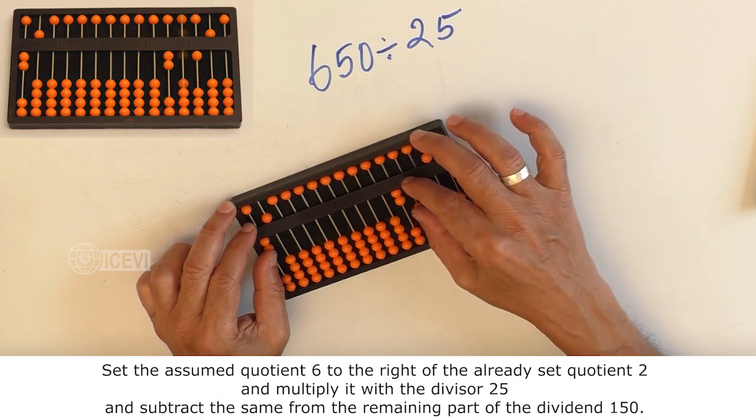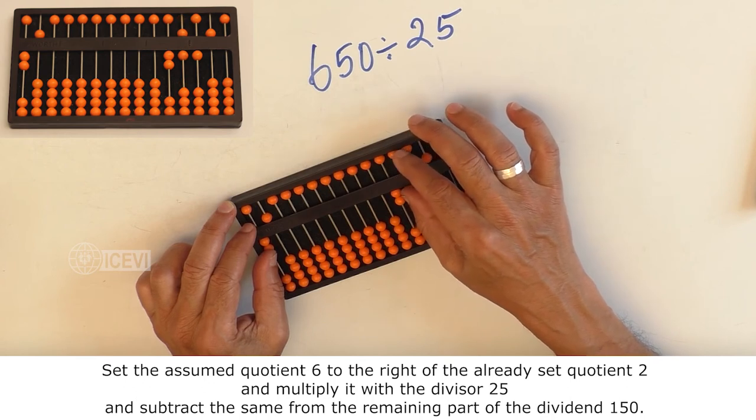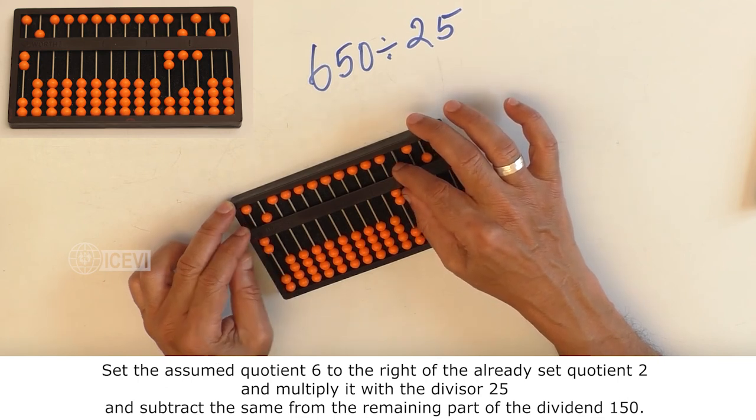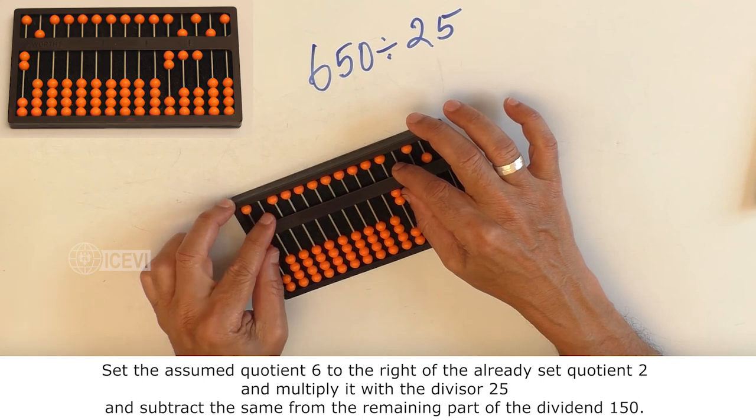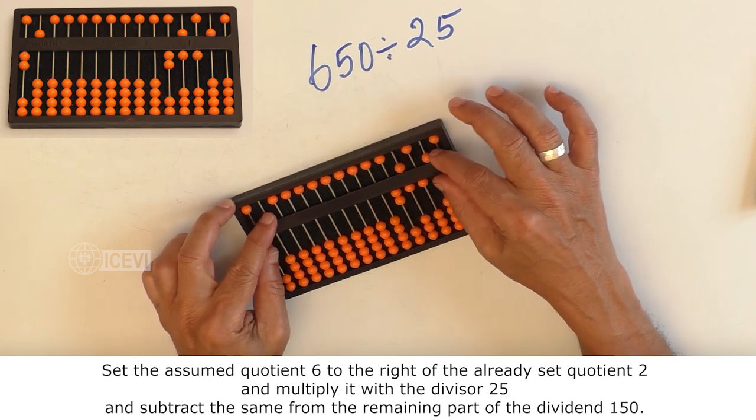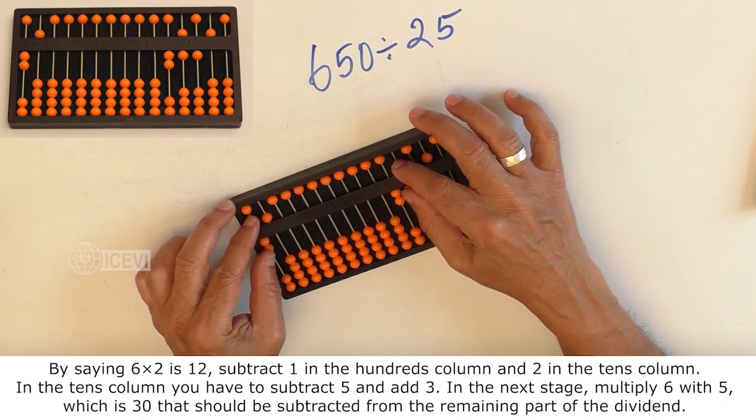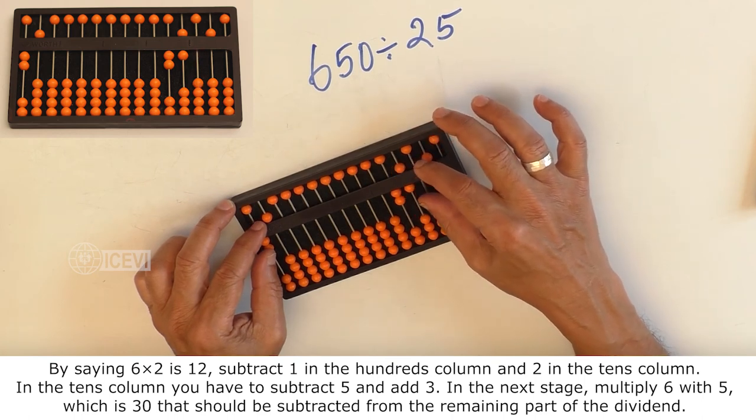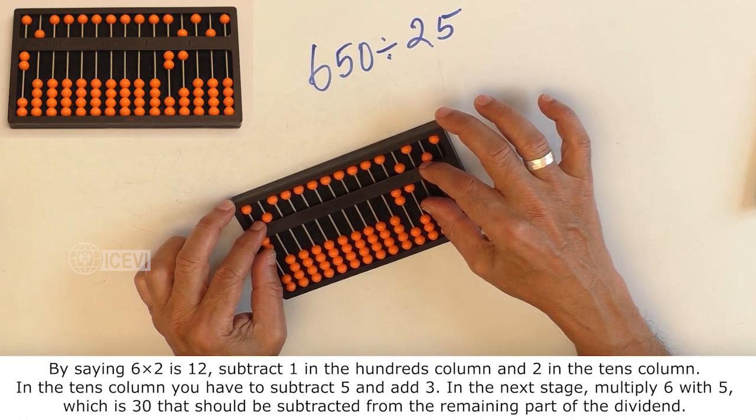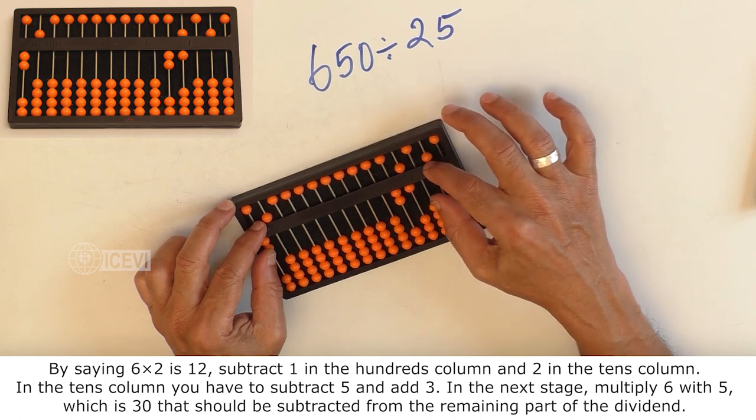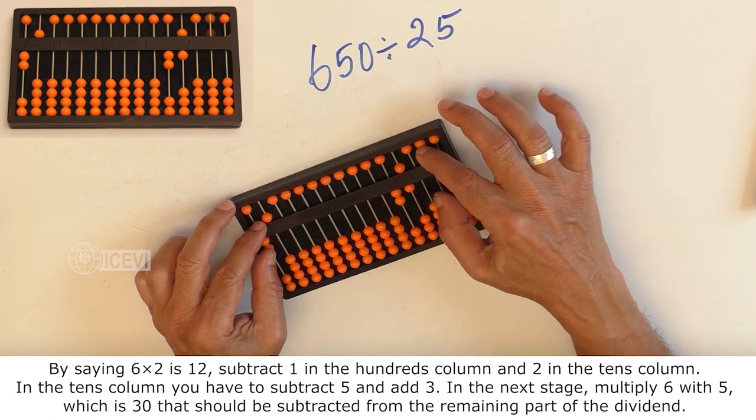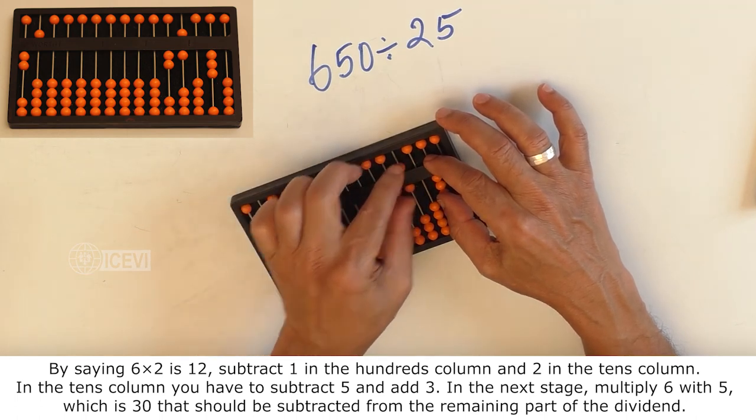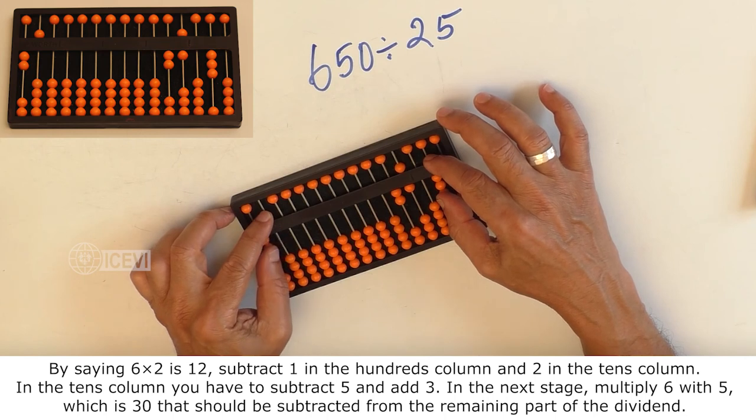Set the assumed quotient to the right of the already set quotient 2 and multiply it with the divisor 25 and subtract the same from the remaining part of the dividend. By saying 6 multiplied by 2 is 12, subtract 1 in the 100's column and 2 in the 10's column. In the 10's column, you have to subtract 5 and add 3. In the next stage, multiply 6 with 5 which is 30.